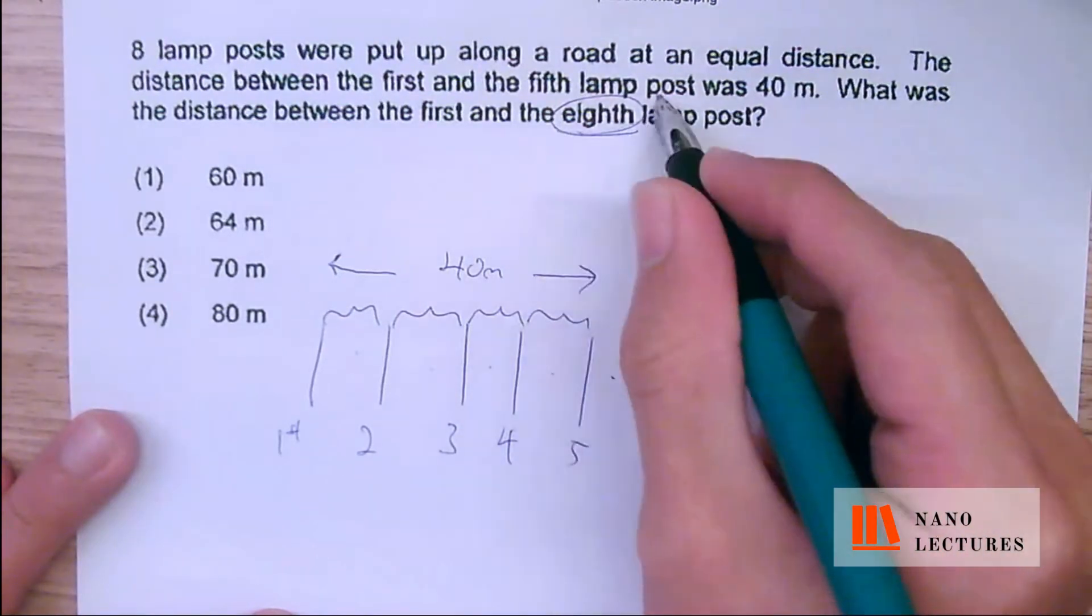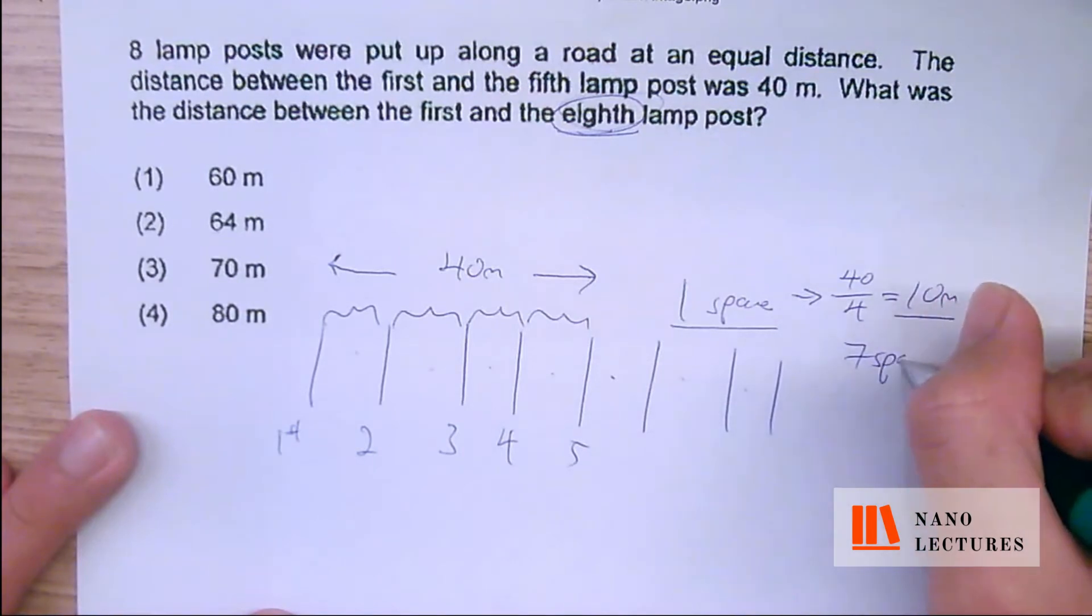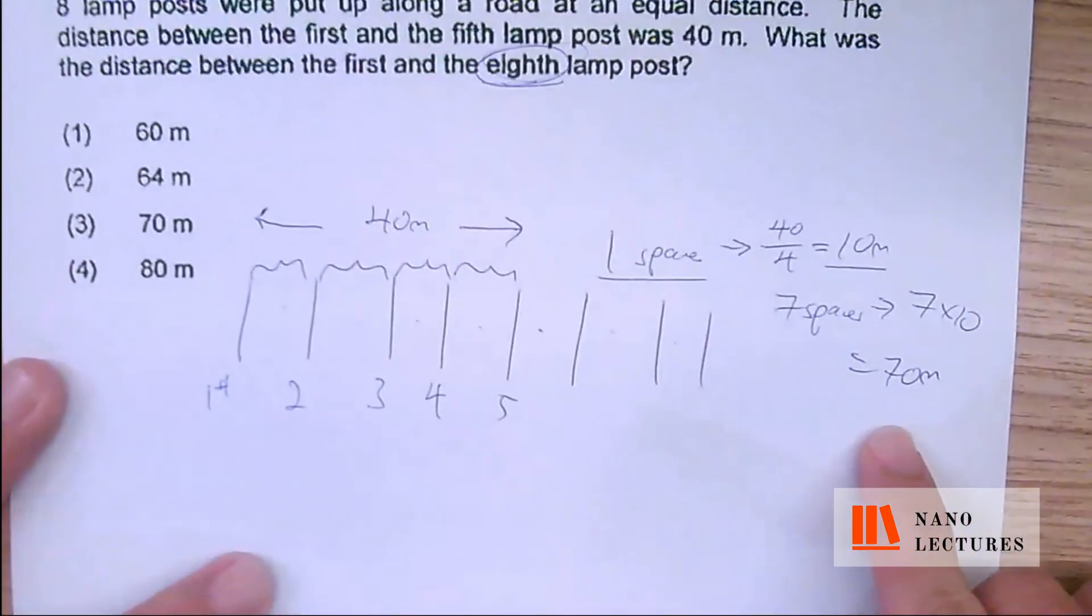So always take the last one minus 1. Now, 1 space will be 10 meters, 7 spaces. That will obviously be 7 times 10, giving us 70 meters. So that's actually how you get it.